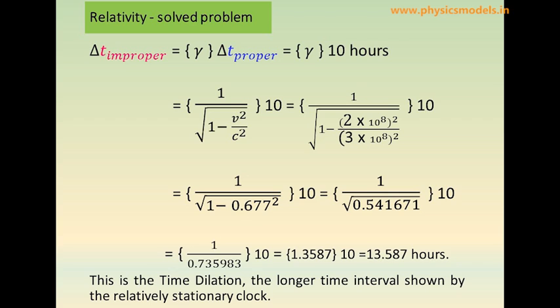Doing the maths, we get the improper time interval as 13.587 hours. So what was actually 10 hours got elongated by 3.587 hours — that's what the stationary guy will see. And this is the concept of time dilation. Thanks and have a great day.